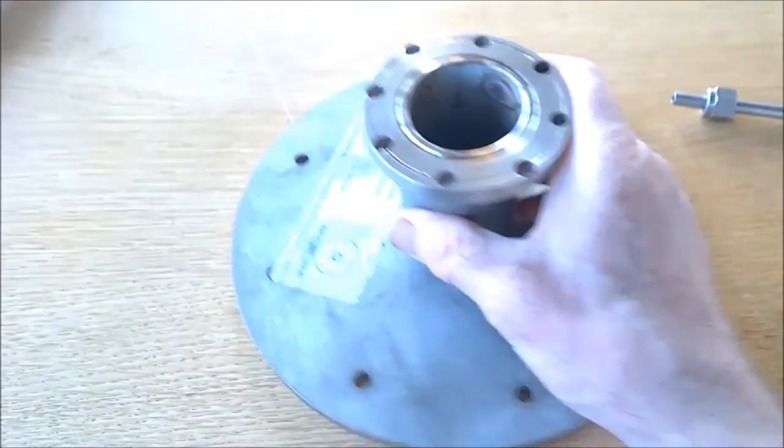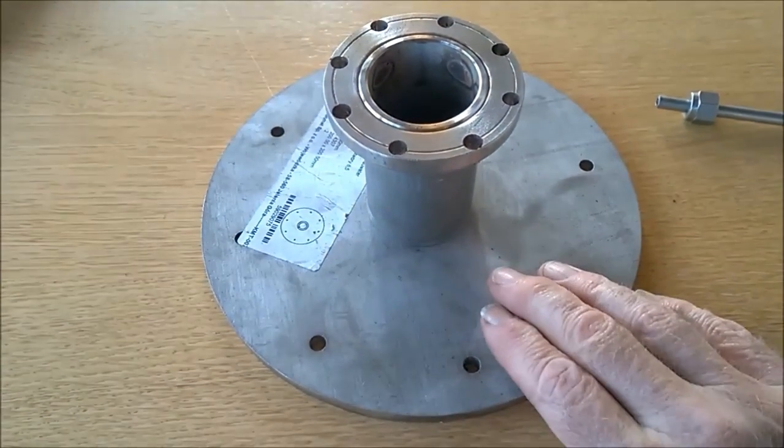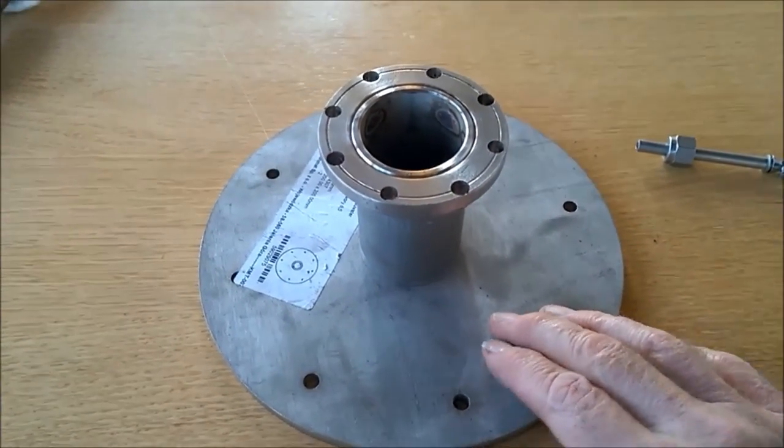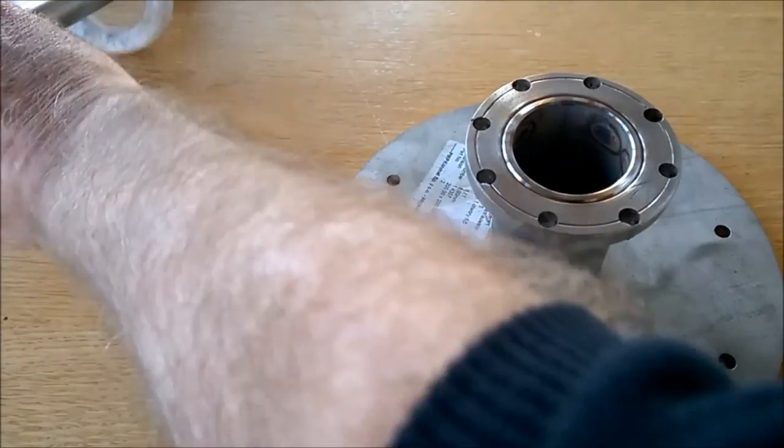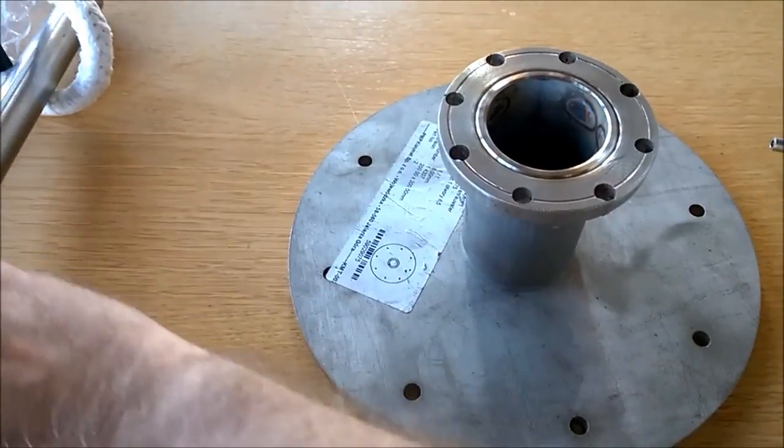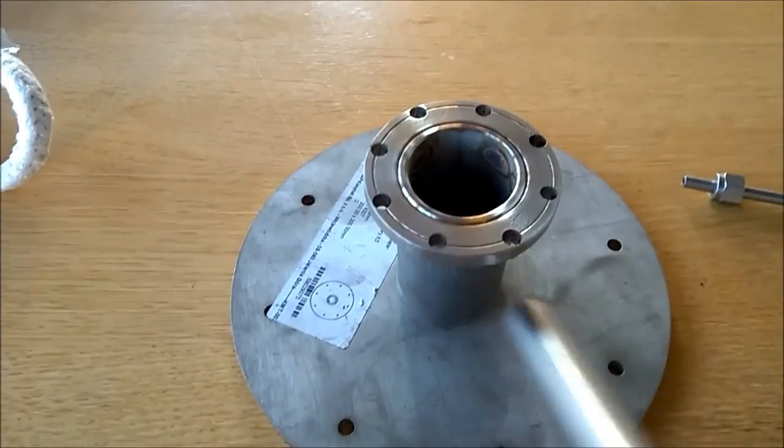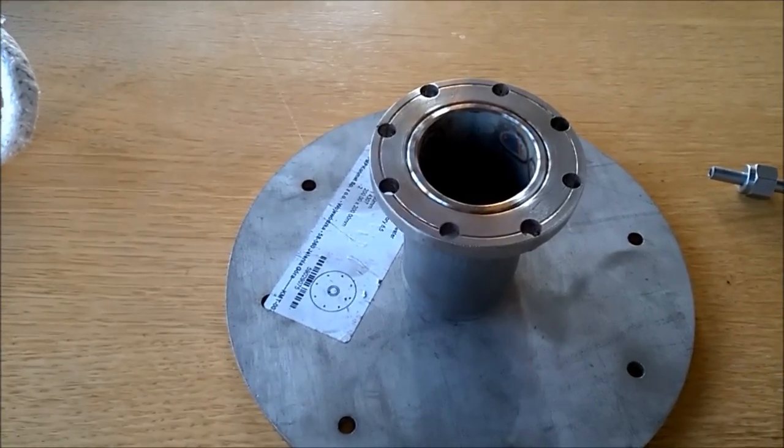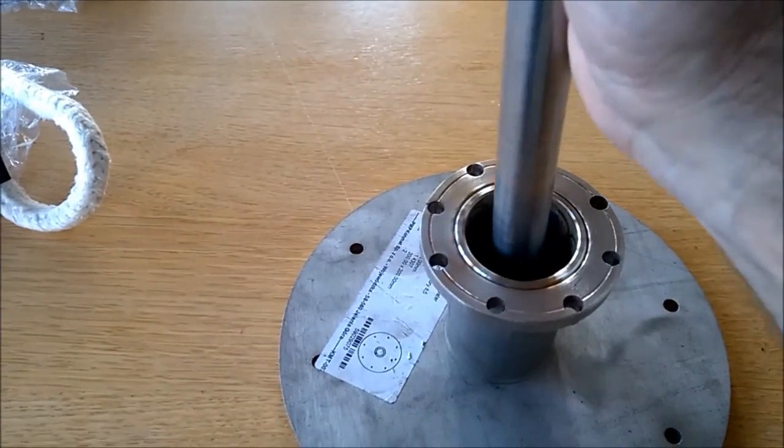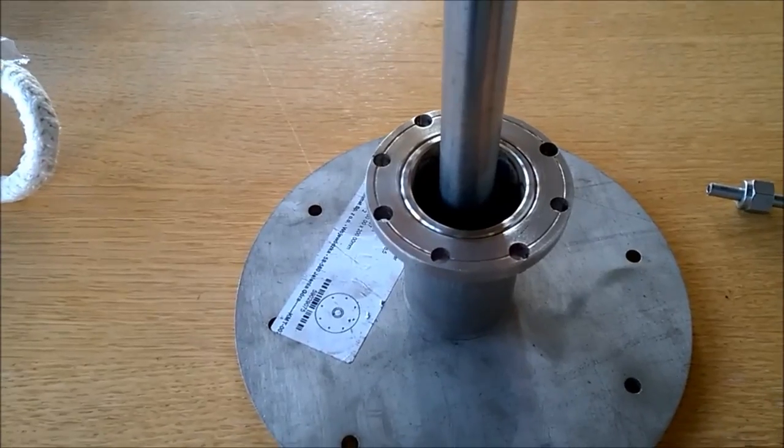So now to seal off, let's say this is your gasifier wall. And you want to get a rod for a grate shaker or for an auger for instance through it which you like to seal off.